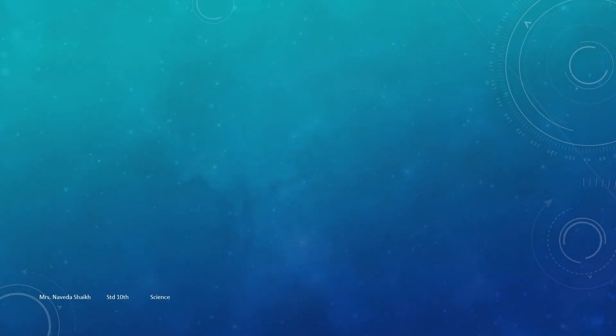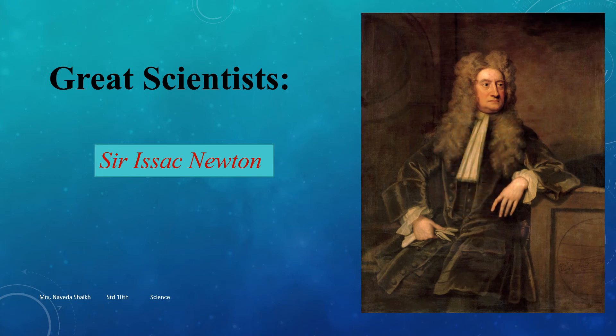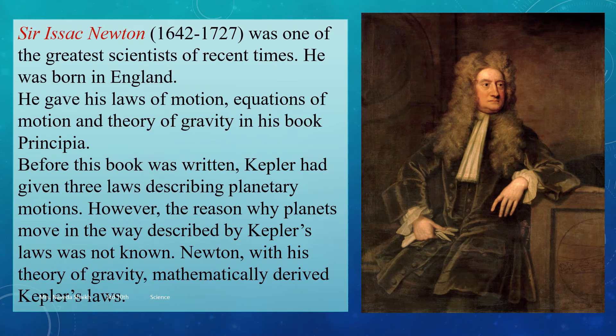Sir Isaac Newton contributed a lot in the fields of mathematics and physics — sound, light, calculus — he was one of the greatest scientists of recent times. He was born in England and gave us laws of motion, equations of motion, and the theory of gravity in his book Principia. Before this, Kepler had given three laws describing planetary motion — the movement of planets in our solar system.